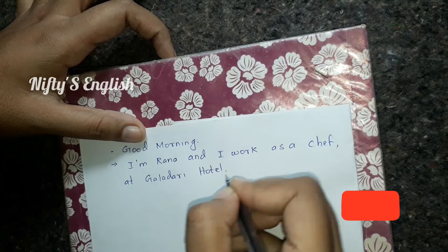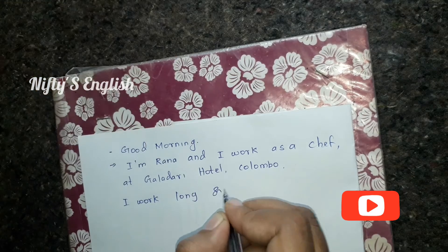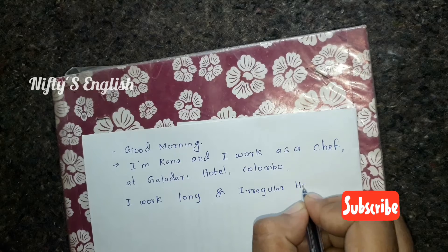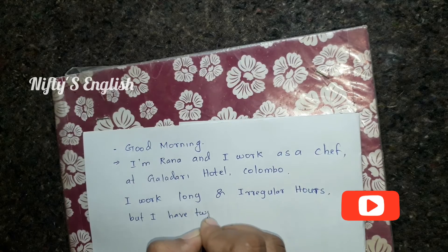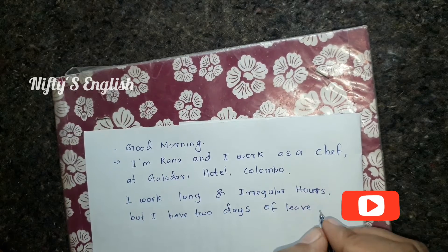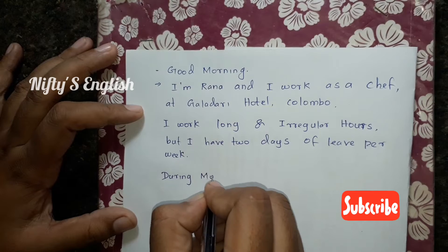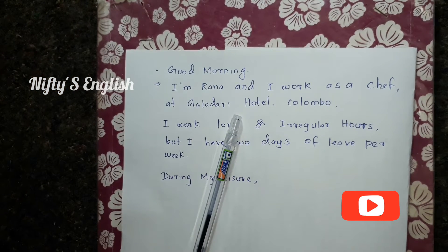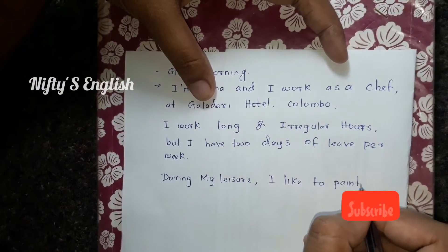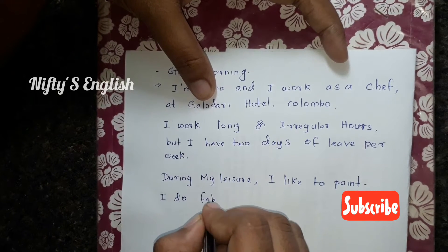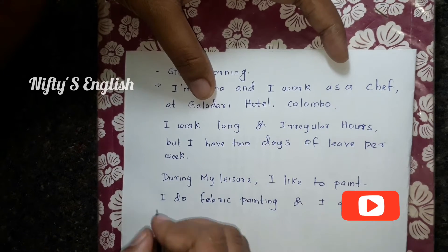Hotel Colombo. The third element is about your work schedule. For example: I work long and irregular hours, but I have two days of leave per week. The next one is leisure activities — during my leisure time, I like to paint. I do fabric painting and I also love